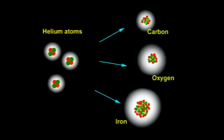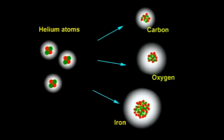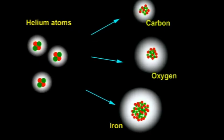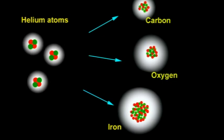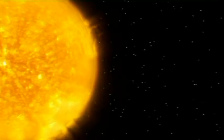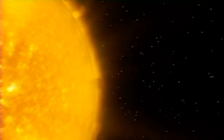When a star can no longer burn hydrogen, it will begin to build heavier elements by fusing helium atoms together. All these reactions take place at much higher temperatures at the core of a star. These higher temperatures make the star expand to many times its original size. The outer regions of such a star become cooler as they get further from the core, so the surface temperature drops and the star turns red.